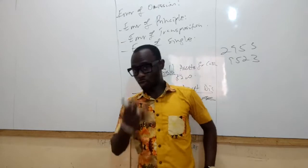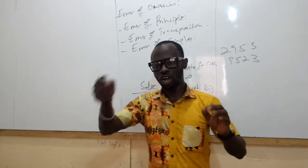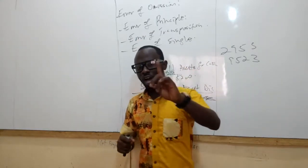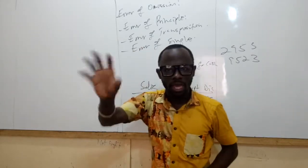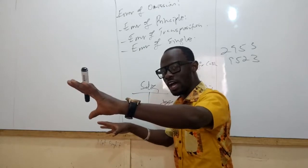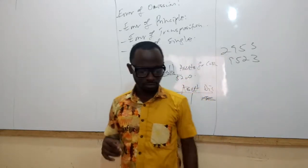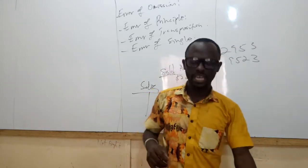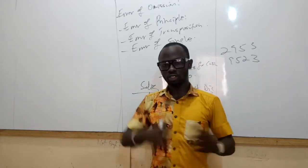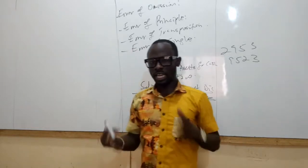Next is error of commission. This is where a transaction is recorded in the correct class of account, but in the wrong account — for example, it is about a supplier, the supplier is Kwame, but you recorded it in Kwani's account. They are all your suppliers, so they are in the same class of accounts, but you recorded it in the wrong account. That is called error of commission. Then there is error of compensating — where coincidentally equal and opposite errors occur in accounts. You make an error in one account and it is compensated by another error in another account.